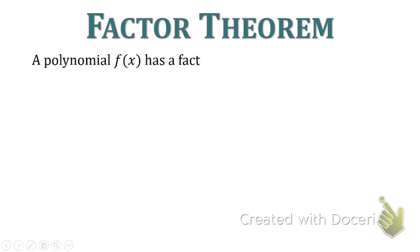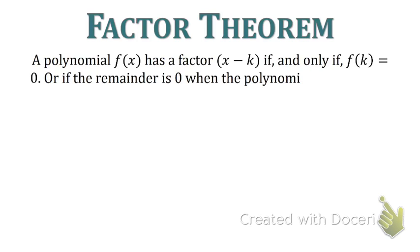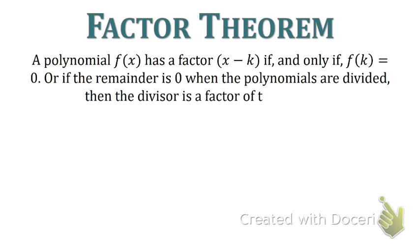The factor theorem states a polynomial f of x has a factor x minus k if and only if f of k equals 0, or if the remainder is 0 when the polynomials are divided. Then the divisor is a factor of the dividend. That second part is talking about what we did with synthetic division — when we divided by a certain number and got 0 at the end, that meant it was a factor. If we didn't get 0, then it wasn't a factor.